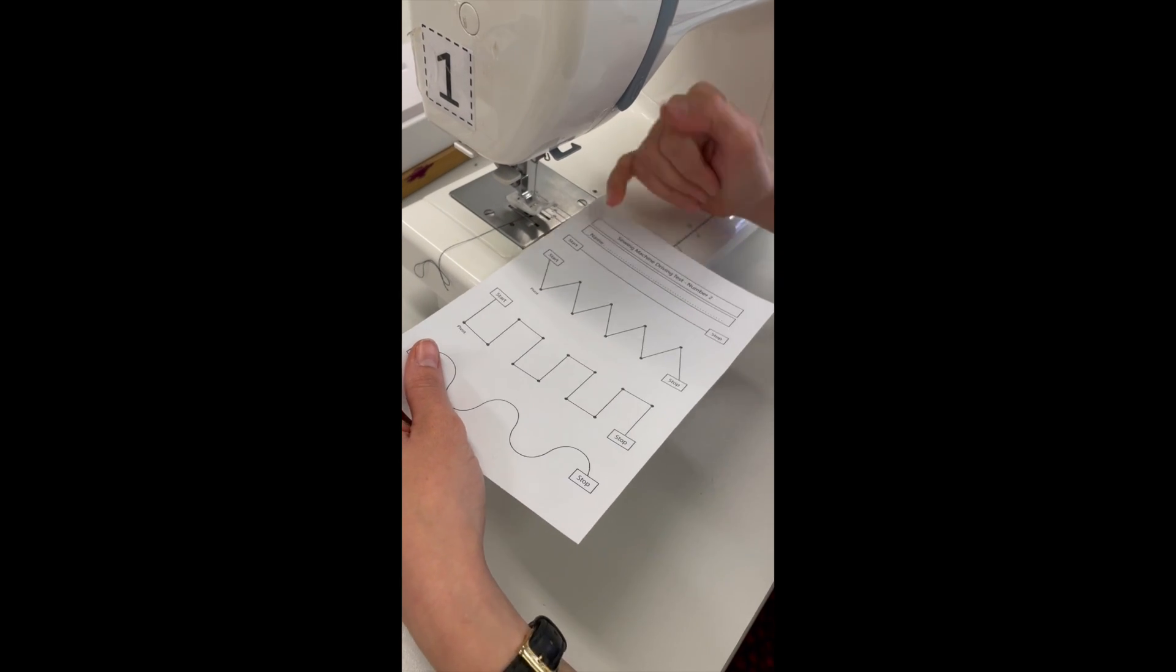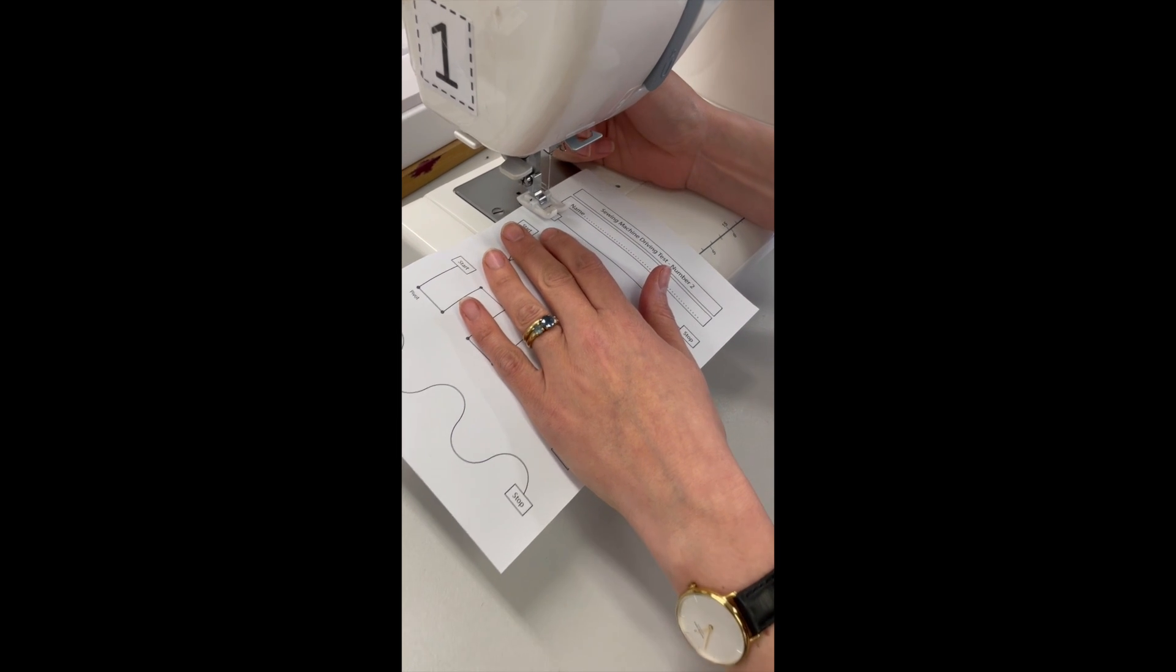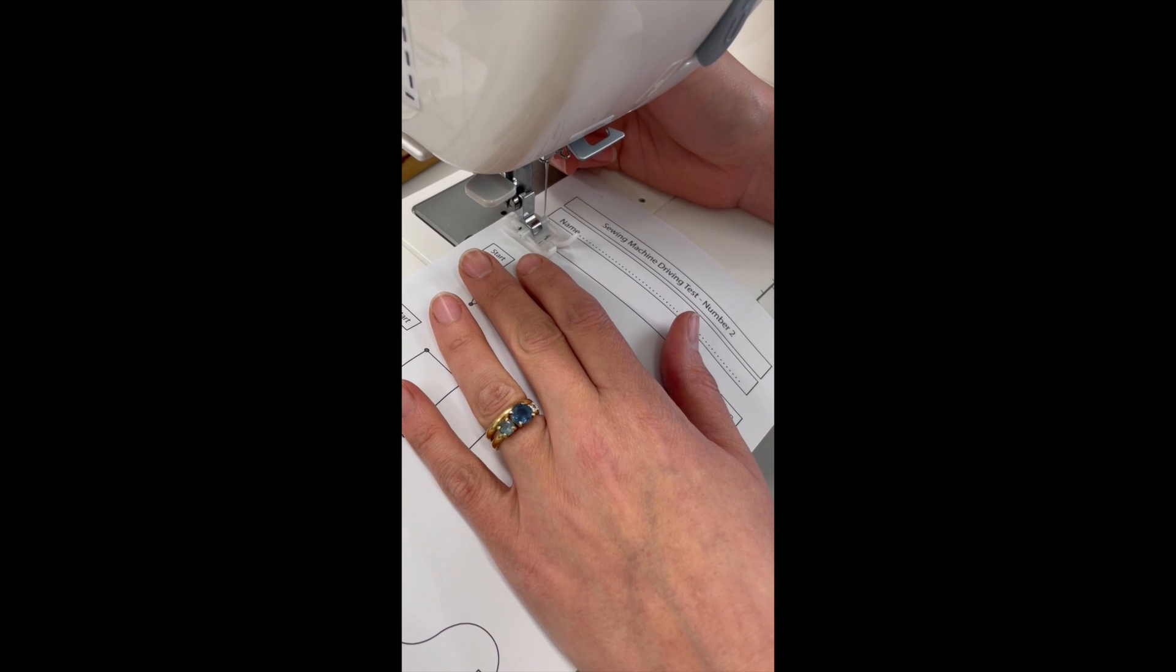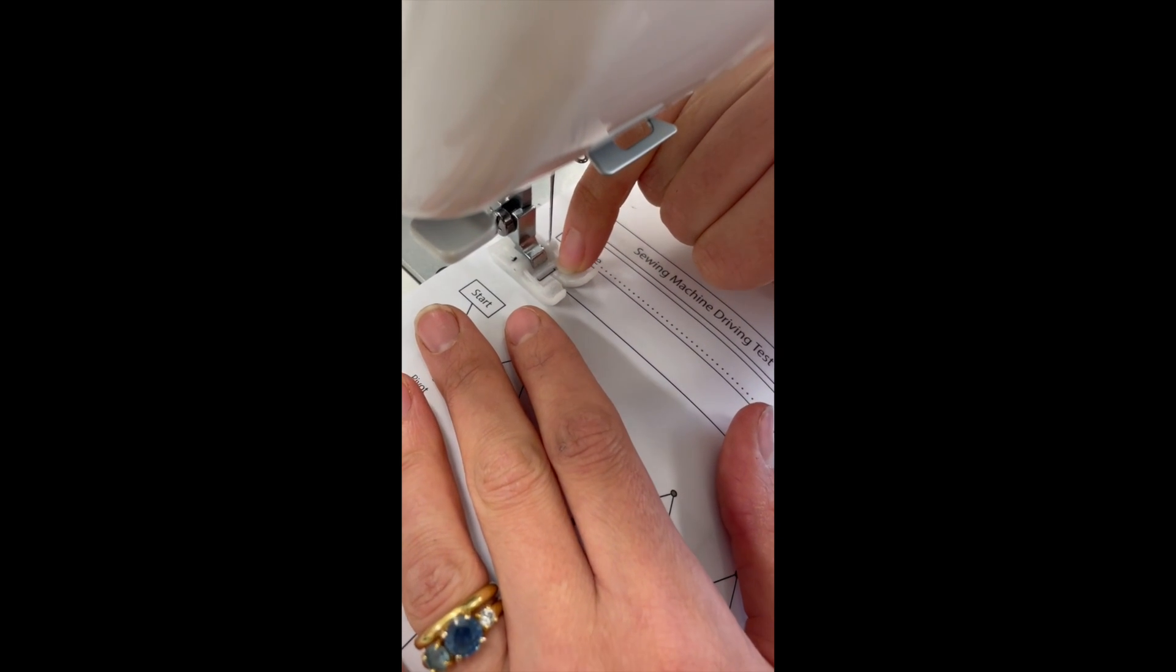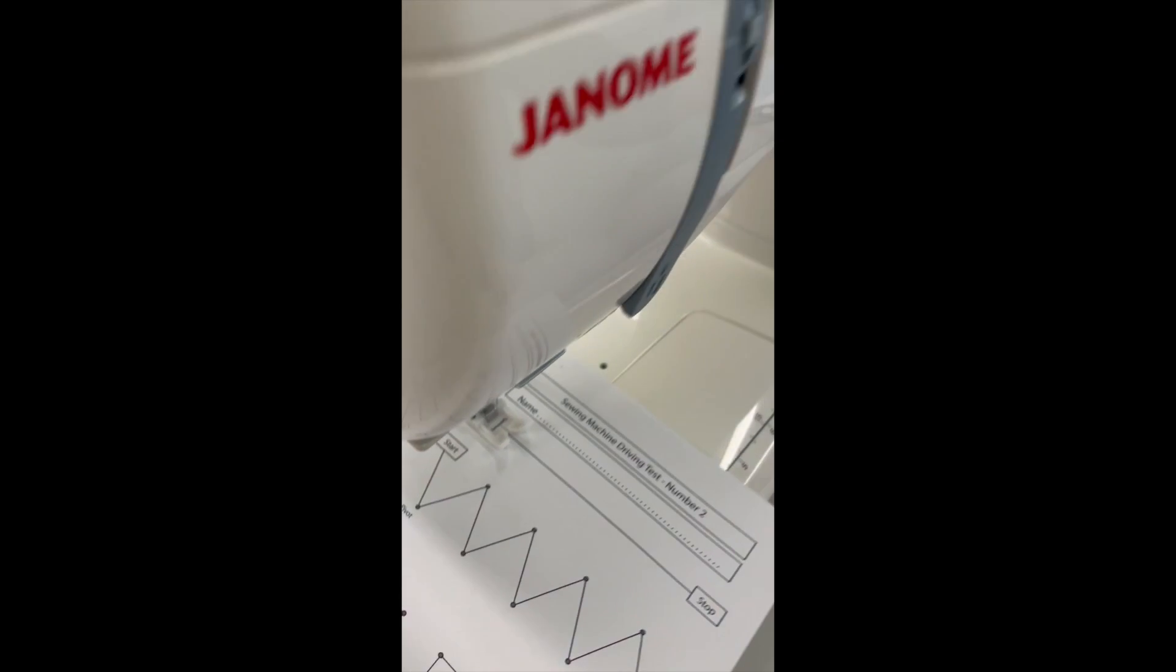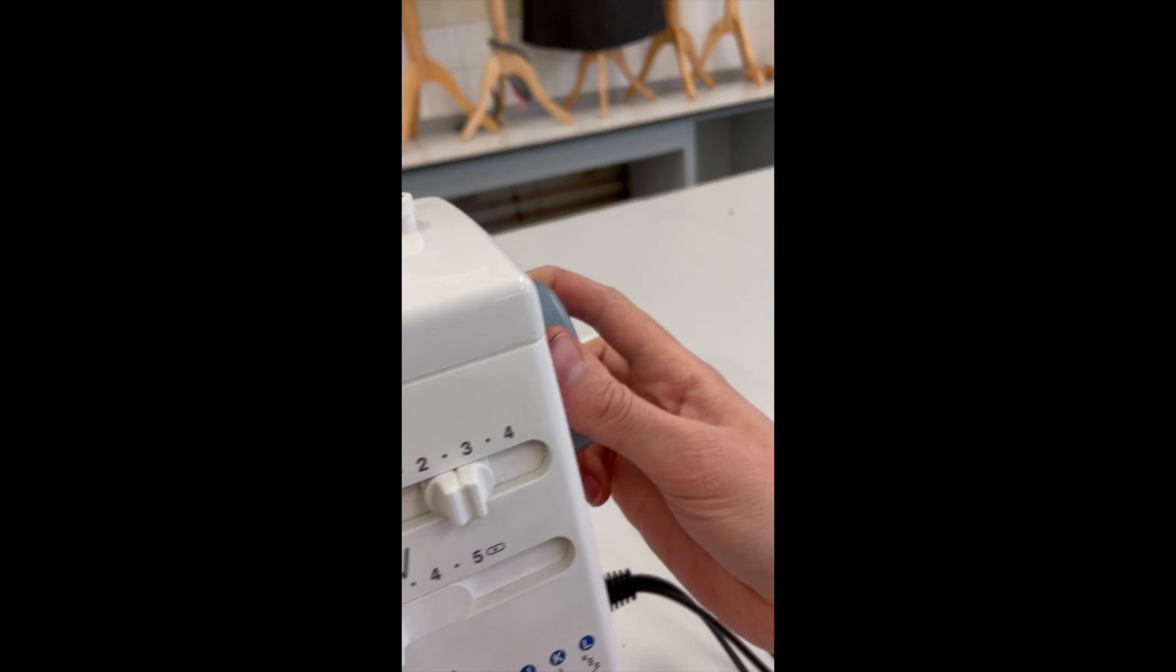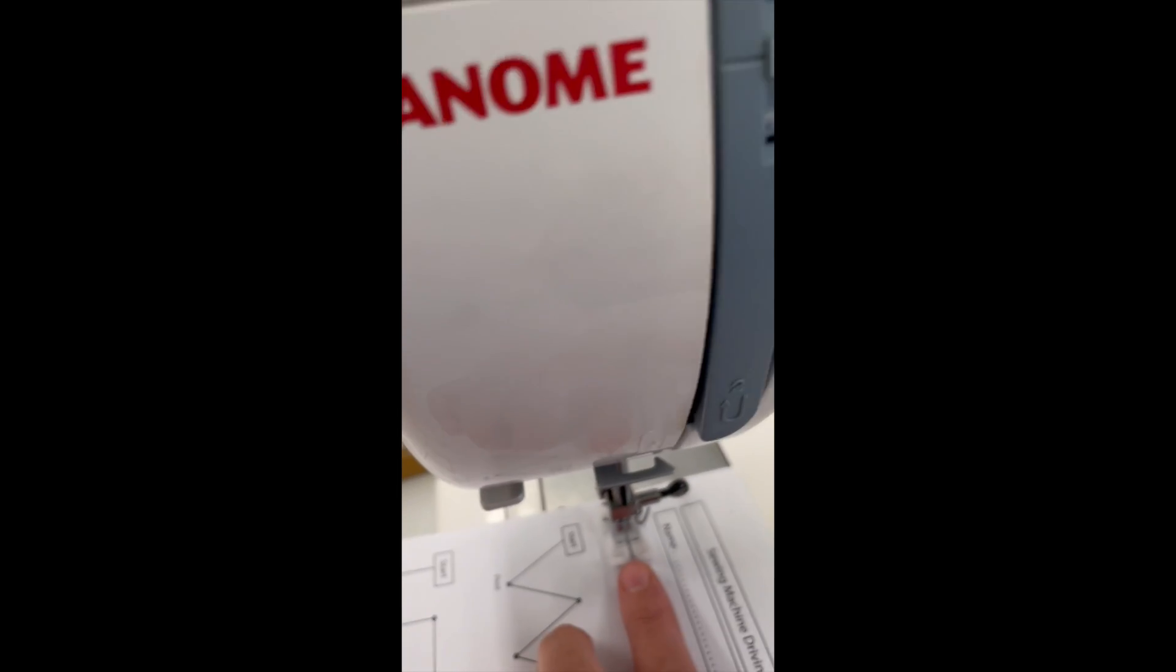Start at an angle, almost upside down but not quite. Put the presser foot gap so that you can see the line directly underneath it. Then turn the hand wheel towards you so that the needle is in the paper.